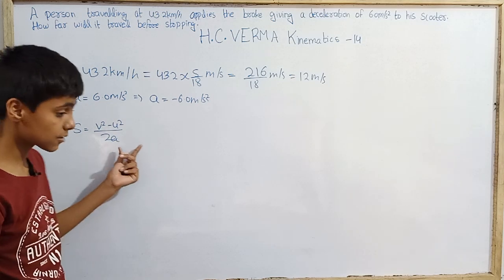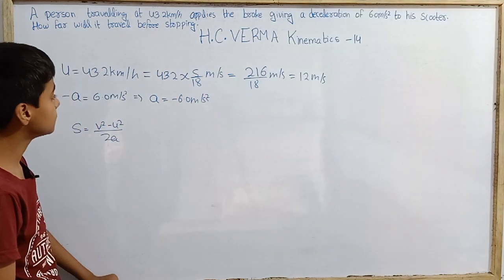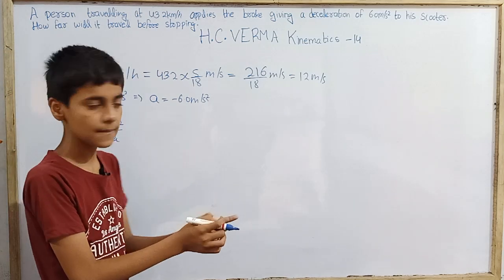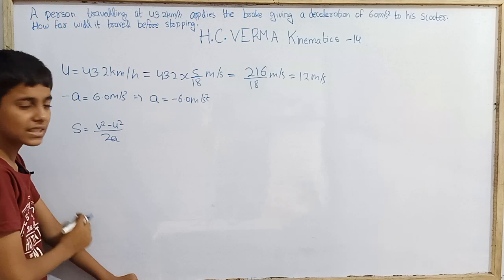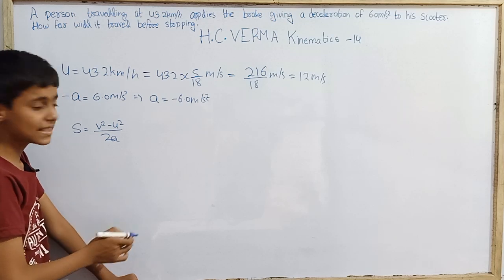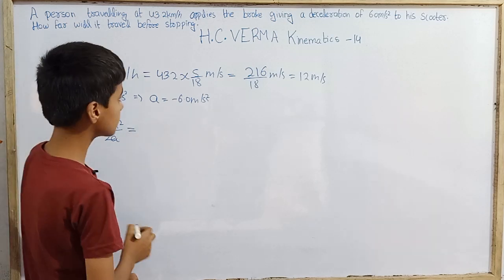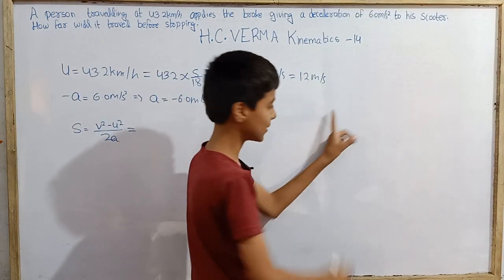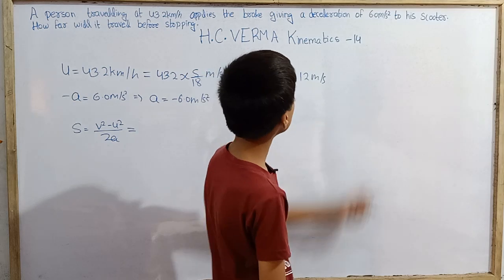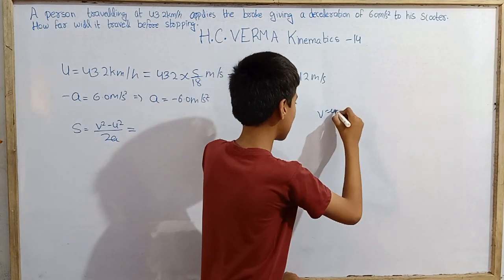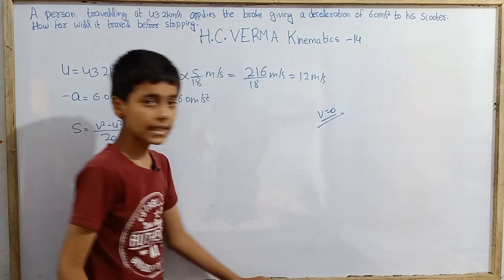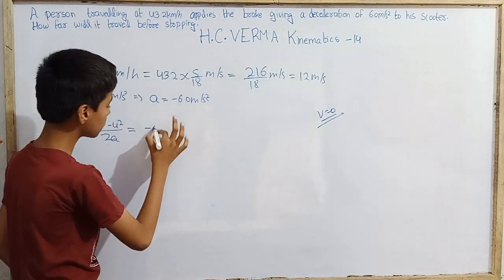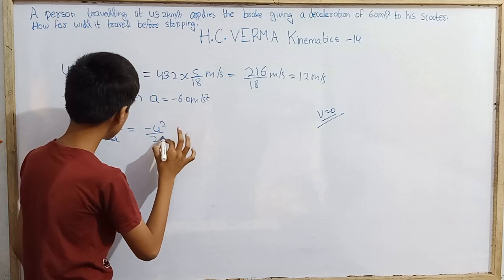Since acceleration is constant, we can use the equations for constant acceleration. The scooter finally comes to rest, which we can model as a point particle. It comes to rest, meaning the final velocity V = 0. Substituting V = 0, the formula simplifies to S = −U² / 2A.